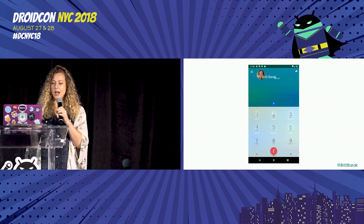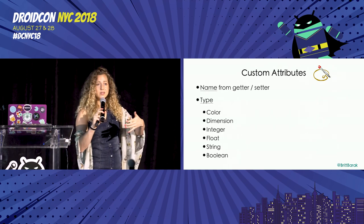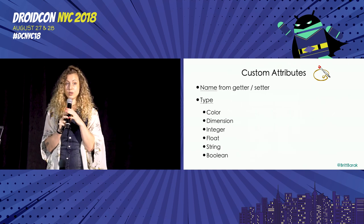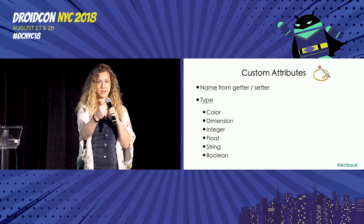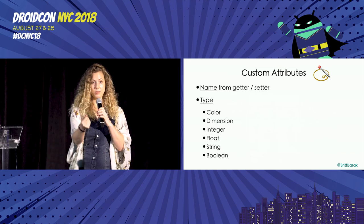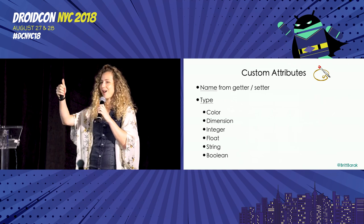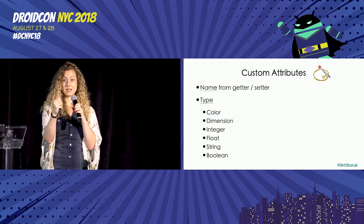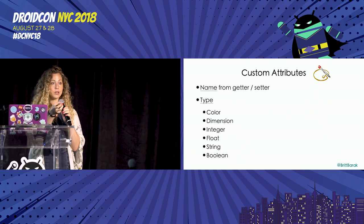Custom attributes can be any attribute that a view exposes through a getter and a setter — that's what defines the attribute name. The supported types are: color, dimension, integer, float, string, or boolean. All of these can be animated as custom attributes. That covers a huge range of things. Let's see the example of how to do it for text size.